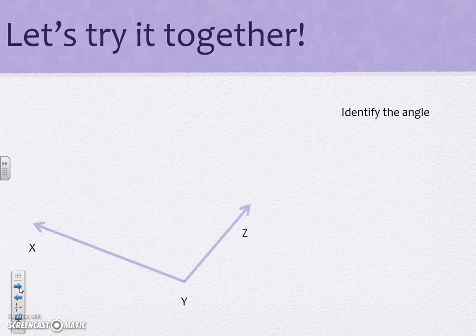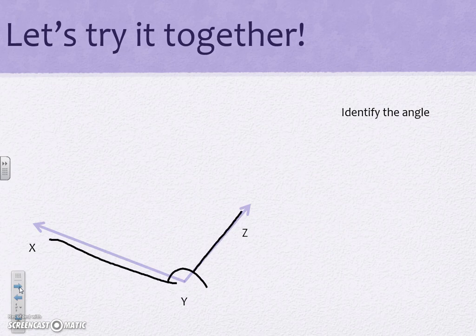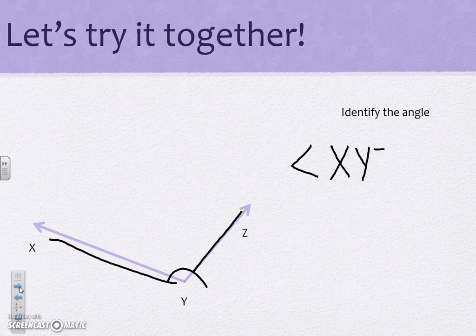Let's do one last one together. Our common point where our two lines meet is right here at Y. So our angle for this one is XYZ. And because this angle is greater than 90 degrees it is an obtuse angle.